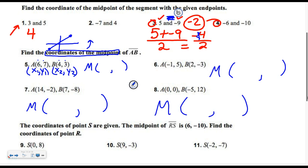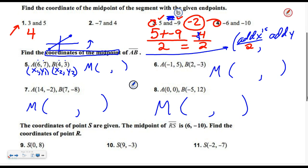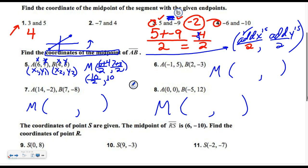In order to get in the middle, you add up the X's and divide by two, then add the Y's and divide by two. So for this example, I add the X's — six plus four — and divide by two. Then I add the Y's — seven plus three — and divide by two. Six plus four is ten divided by two; seven plus three is ten divided by two. Those are both five. So the midpoint of segment AB is five, five.